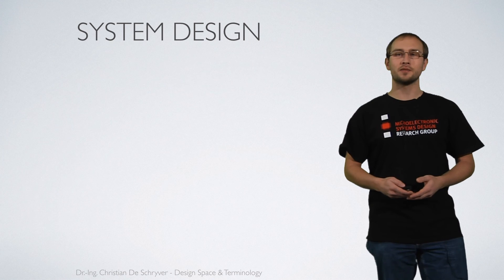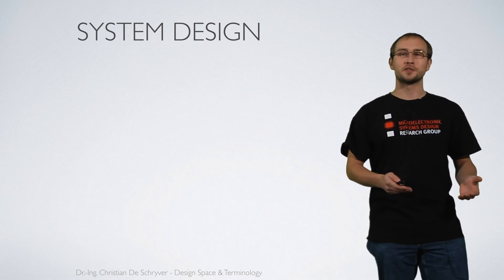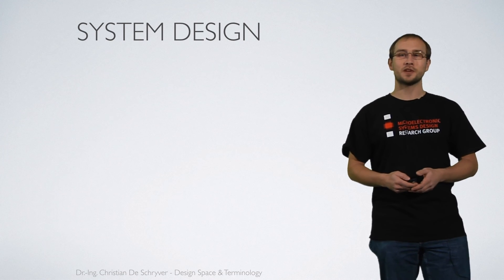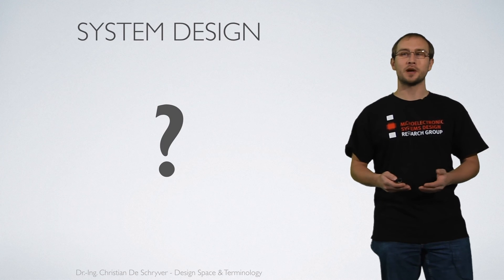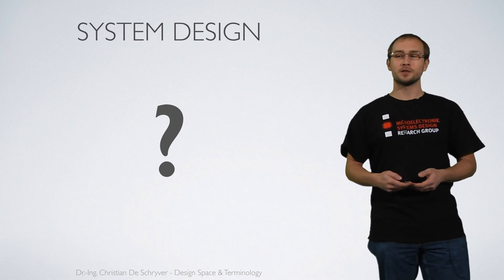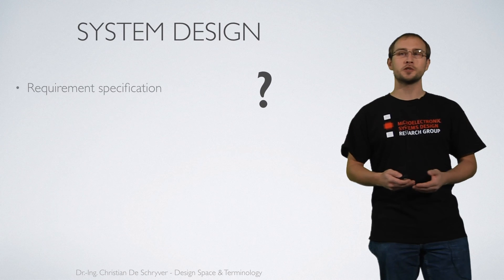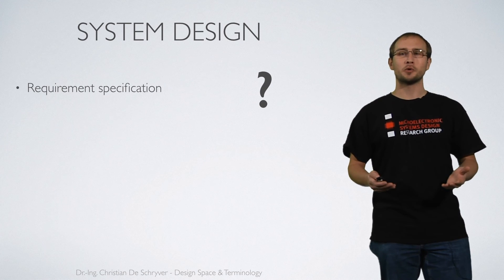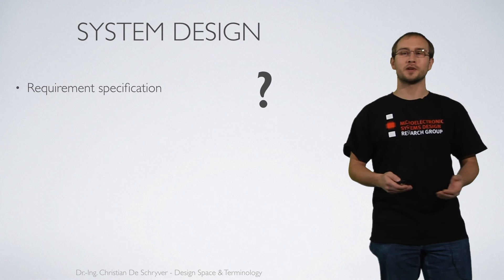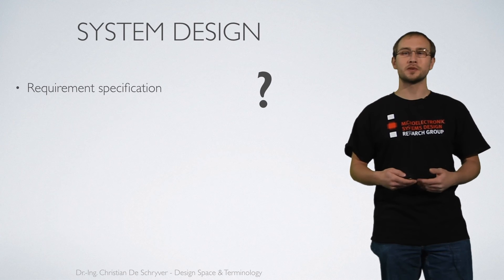Assume you as a system designer are given a task: design a specific system for me. Of course at the very beginning a lot of things will be unclear. This is why in general you will receive a specification. In the most general case it's a requirement specification that tells you what the system is all about.